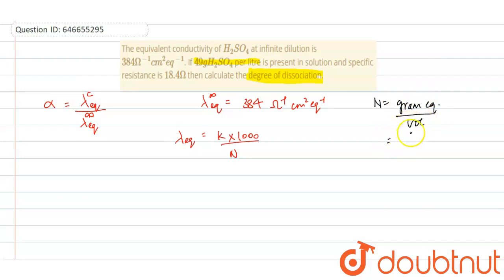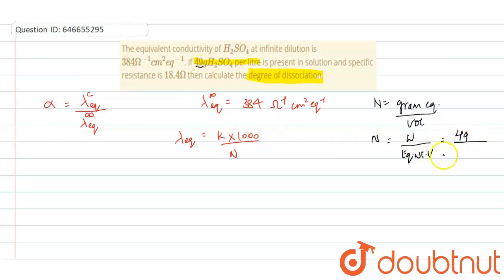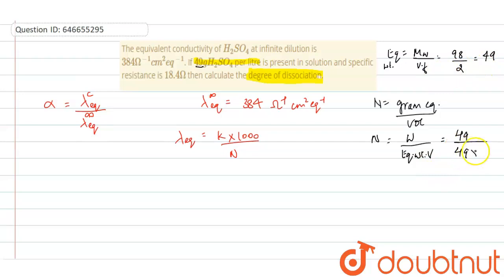Gram equivalent is given weight divided by equivalent weight, divided by volume — this gives normality. The given weight is 49 grams. The equivalent weight of H₂SO₄: equivalent weight equals molecular weight divided by valency factor. Molecular weight is 98 and valency factor is 2, so equivalent weight is 49. With 1 liter of solution, normality = 49/49 = 1.